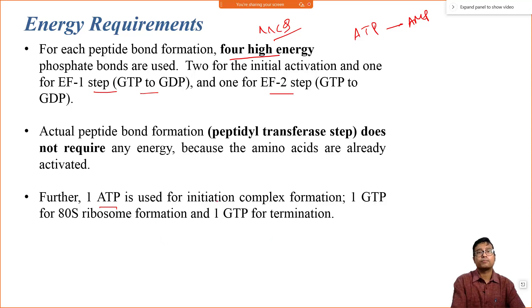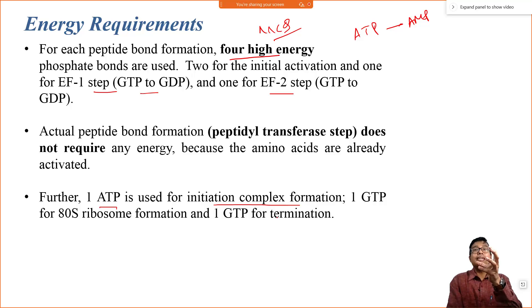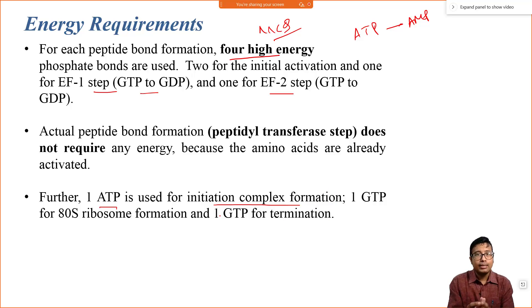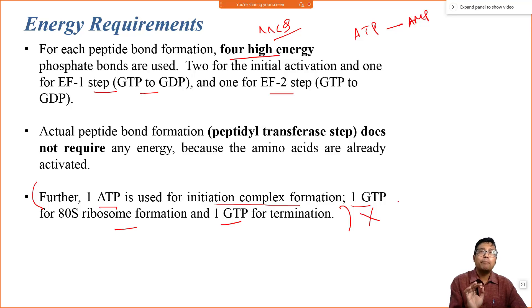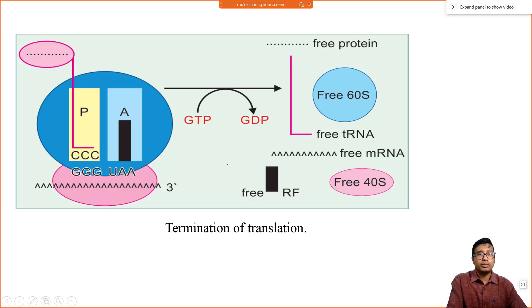Additionally, one ATP is used for initiation complex formation — recall the 60S joining with 40S to form the 80S required one extra ATP. So if we calculate, one GTP is required for termination and one GTP for 80S formation. For proper MCQ purpose, just remember: one peptide bond formation needs four high energy phosphate bonds. This is a must-know area. If you follow both classes, this is very obvious.